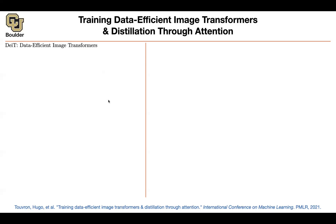Vision Transformer is trained on JFT data — a private dataset from Google with 300 million images. To put things into perspective, ImageNet has around 1 million images, so JFT is 300 times bigger. They were using JFT-300M because transformers are less data-efficient compared to convolutions.